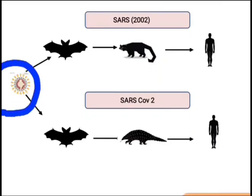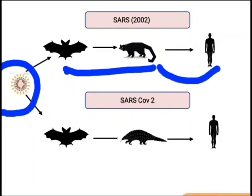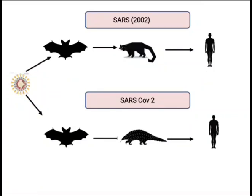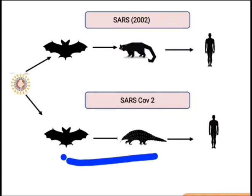The virus is a host to bats. In the SARS epidemic in China in 2002, the virus traveled from bat to civets, and then from civets it broke the species barrier because of mutation in the virus, allowing it to infect other organisms like human beings. Scientific data tells us that in SARS-CoV-2, which is the COVID-19 global pandemic, the virus was a host to bats, then infected an intermediate host — pangolins — and through pangolins it traveled to humans.